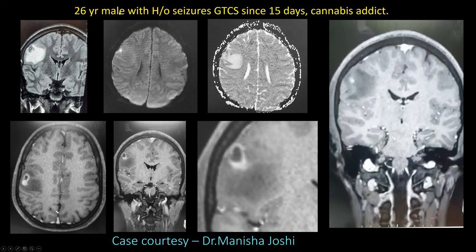First case: 26-year-old male with history of seizures, GTCS since 15 days, and cannabis addict. There is a T2 hyperintense ring-like lesion with perilesional vasogenic edema noted in the right superior frontoparietal convexity. There is restricted diffusion on DWI with the core being low on ADC. On IV contrast, conglomerate ring enhancing lesions are noted in the right superior frontoparietal convexity.